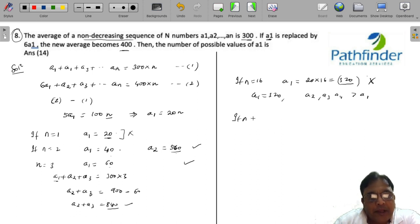How about n equals 15? a1 is 20 into 15, that equals 300. Now if a1 is 300, we can have all other values a2 equals a3 equals a4 and so on till 300. If every number is 300, then the average of all of these 15 numbers must be 300. Since a1, a2, a3 are non-decreasing sequence, a2, a3 cannot be less than a1, but they can be equal to a1.